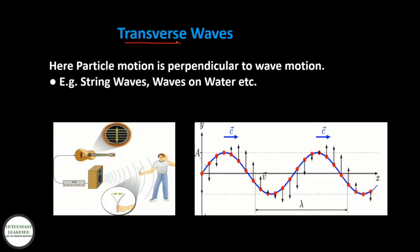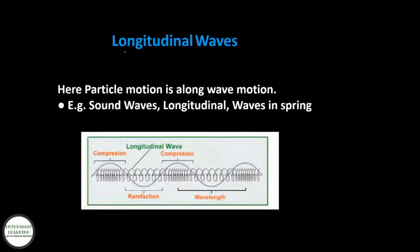In transverse waves, particle motion is perpendicular to the wave motion. Examples include string waves and waves on water. In longitudinal waves, particle motion is along the direction of wave motion. Examples include sound waves and waves in a spring.